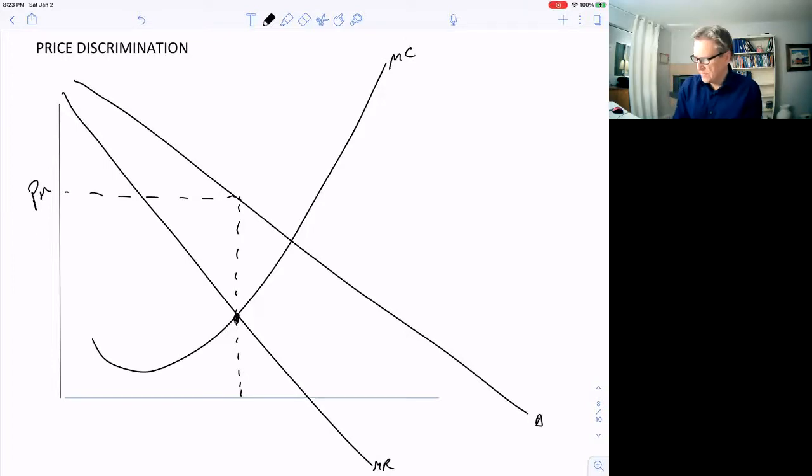And everybody is paying P superscript M. But we've got people that would actually like to buy the product at a little lower price and the monopolist could make it at a cheaper price.